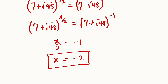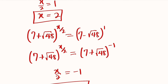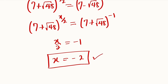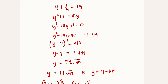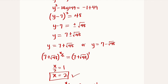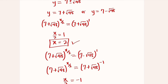Hence we have two values of x. The first is x equals 2 and the other is x equals negative 2. These are the two solutions that satisfy the original equation: square root of 7 plus square root of 48 to the power of x, plus square root of 7 minus square root of 48 to the power of x, equals 14. The real values of x are 2 and negative 2. Thank you for watching — do share with your learning colleagues and subscribe to the YouTube channel for more exciting videos.